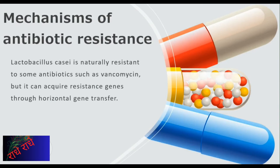The Lactobacillus casei strain of bacteria is naturally resistant to some antibiotics such as vancomycin. However, it can acquire antibiotic resistance genes through horizontal gene transfer. This process is an important topic to consider in order to protect against the spread of antibiotic resistance in both humans and animals.